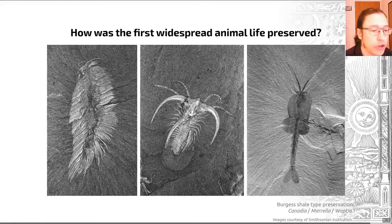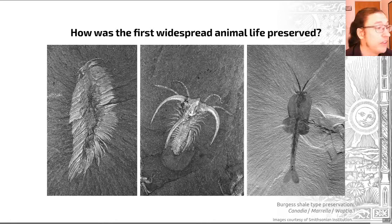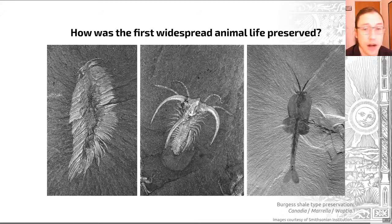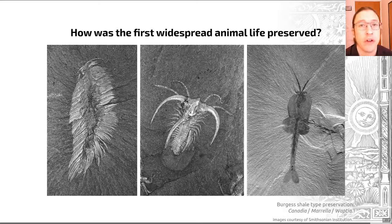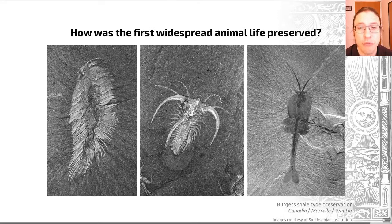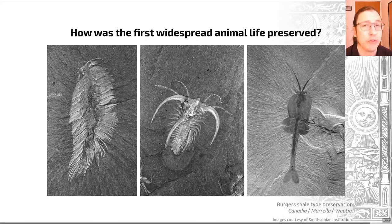Examples of fossils are shown on this slide. These are all creepy crawlies — arthropods, creatures with segmented legs. But a wide range of other creatures of phyla appear during this time period. We know about this event from deposits like the Burgess Shale, a very famous site of exceptional fossil preservation in Canada.